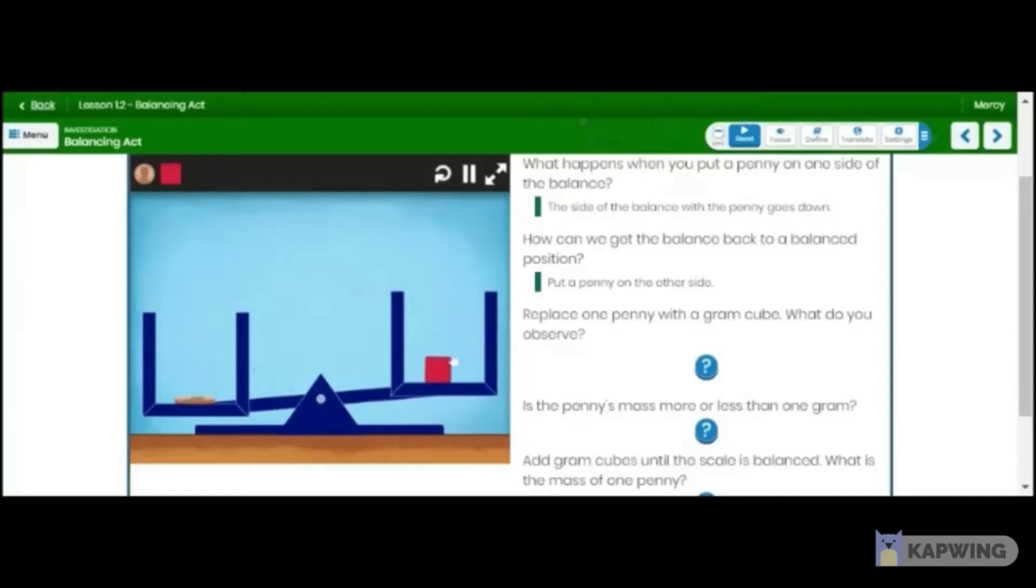What else do you notice about this? The penny is below, it's down, the cube is up. That means it's not balanced. It's not balanced. That means something is heavier and the other thing is lighter. Now, which one is heavier? The coin. Yeah, because the coin, the pan that the coin is in are lower than this other pan, which has the one gram cube, it tells us that this coin must be heavier than this one gram cube right here. Let's see if we answer it correctly. It says the side with the penny sinks lower than the side with the gram cube. That's right.